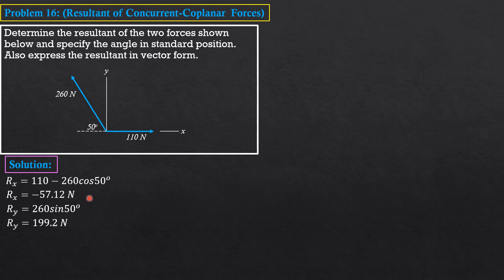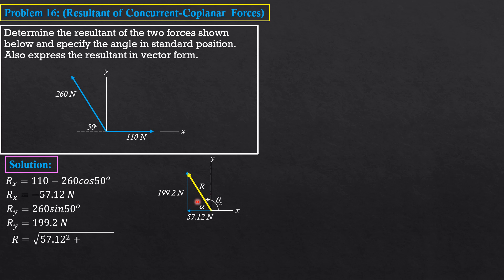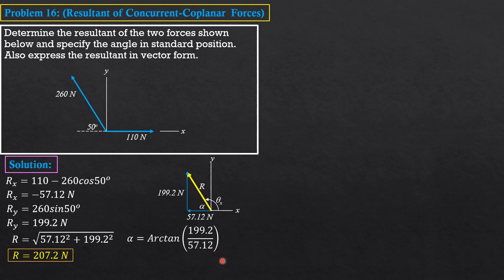Since Rx is negative (leftward) and Ry is positive (upward), the resultant points in that direction, so theta_x is greater than 90°. It equals 180° minus alpha. We compute alpha from the right triangle: tan(alpha) = 199.2 / 57.12. The magnitude of the resultant is the square root of 57.12² + 199.2², giving 207.2 Newtons. Alpha = arctan(199.2 / 57.12) = 74°.